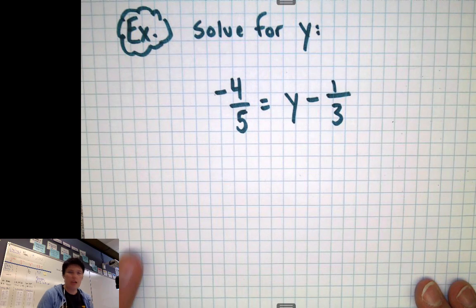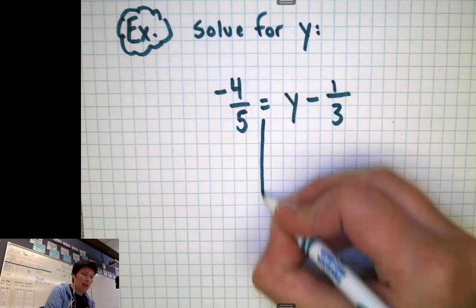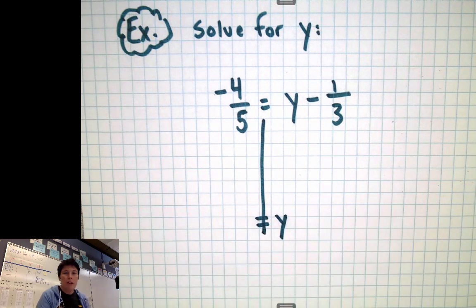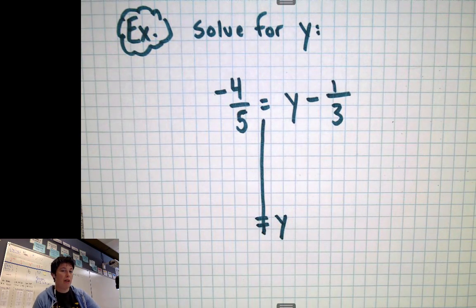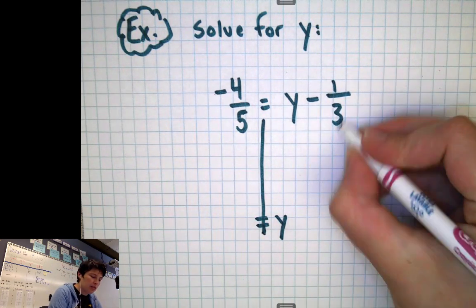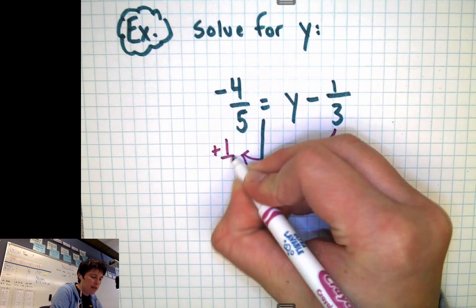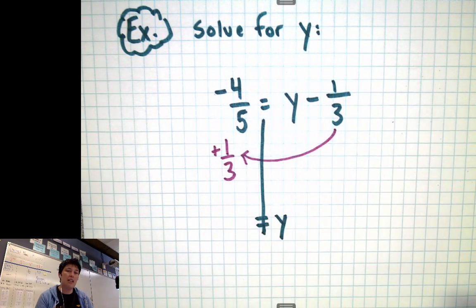Okay, so same idea here. We're going to put the line down the equal sign. We're going to isolate y. This time it's on the right-hand side. We're going to get it all by itself. And what needs to leave our variable? What do we need to get rid of from that y? Well, the minus 1/3rd. So when we take the minus 1/3rd over, it's going to change into a positive 1/3rd. You're going to end up adding it to the other side.